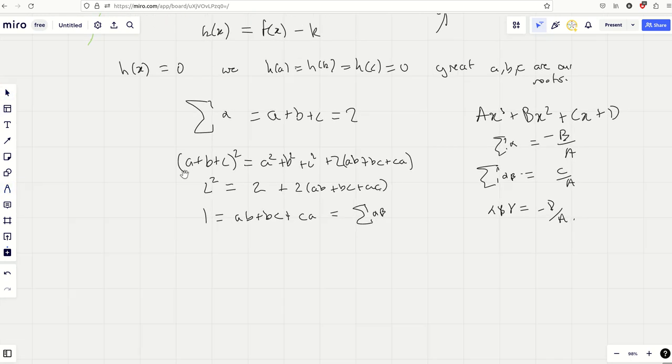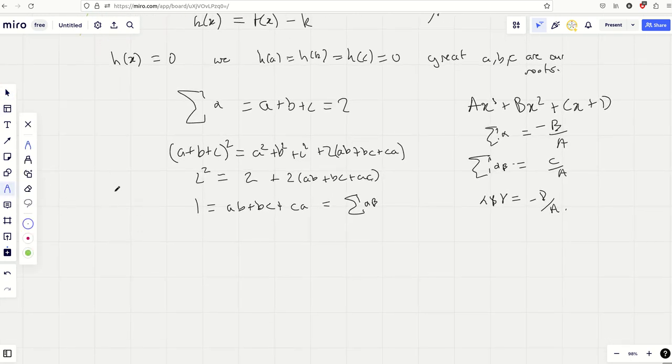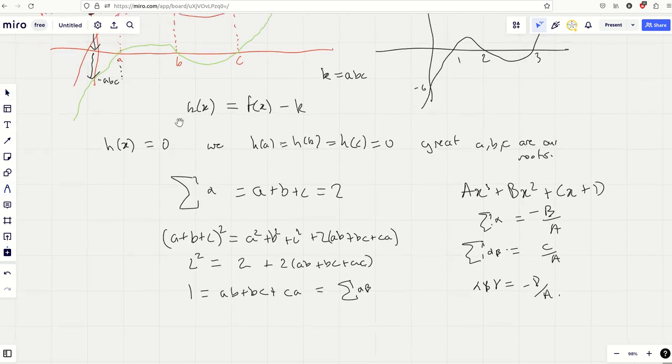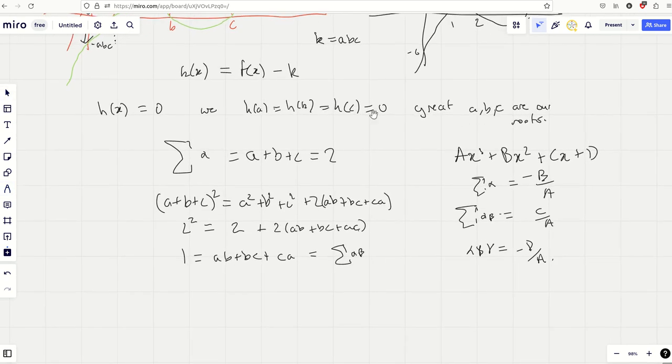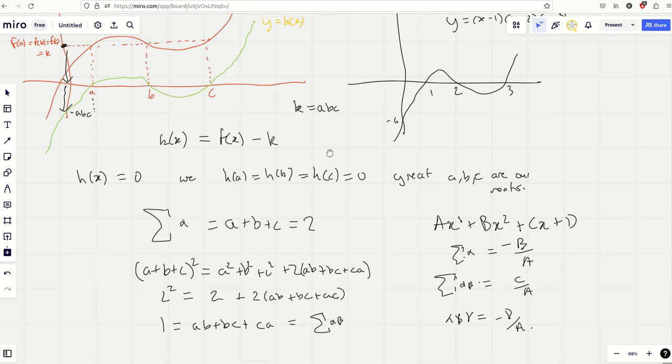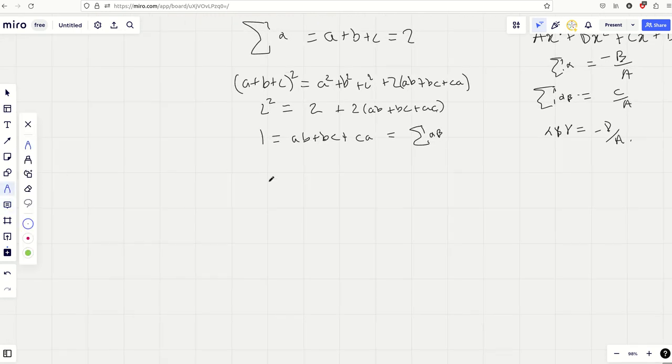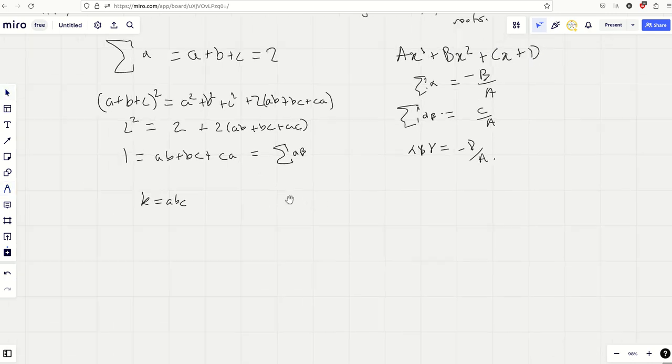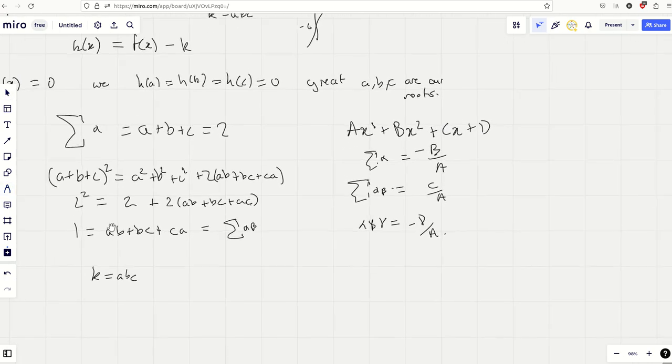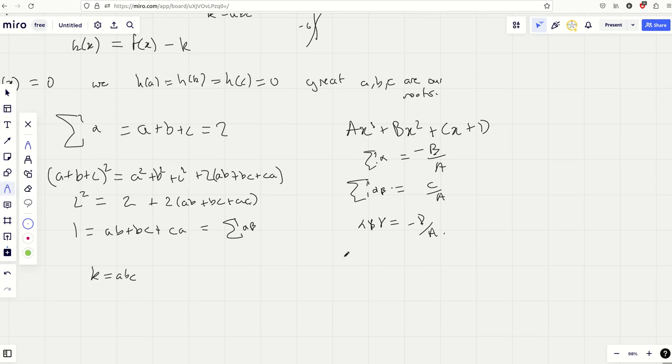Now we just need the product. Now we've got these two values. Have we also not already got the product? That ABC is K. So let's actually do it, and let's just write down our results now, using these rules of roots of polynomials.